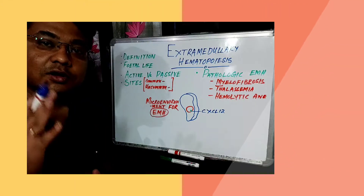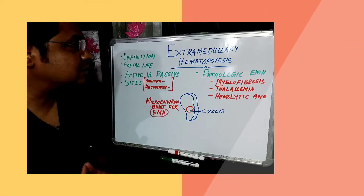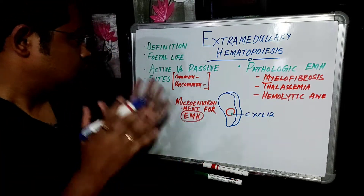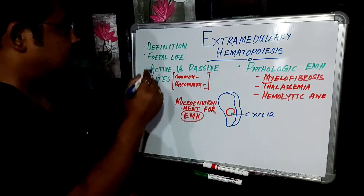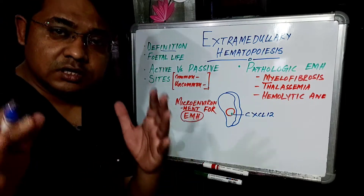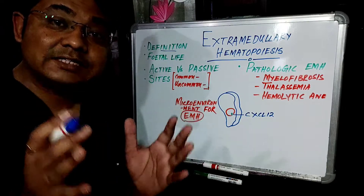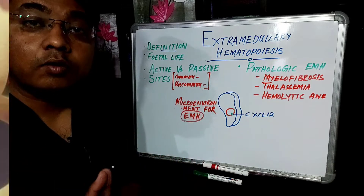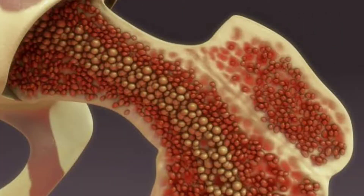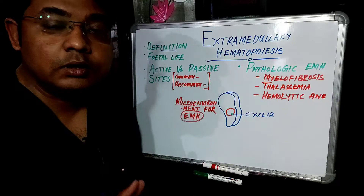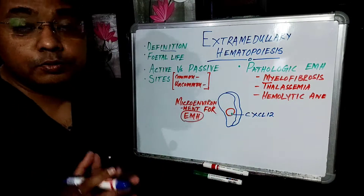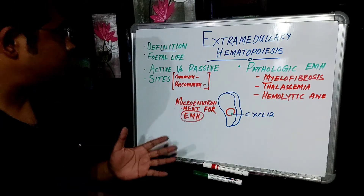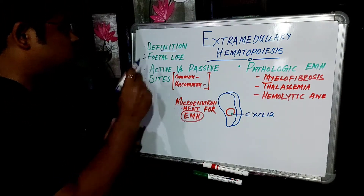Welcome to another vlog. Today the topic of discussion is extramedullary hematopoiesis. The definition of extramedullary hematopoiesis is the process of hematopoiesis that is occurring outside the bone marrow. The normal site for production of blood elements is bone marrow, so if in any adult human being the process of hematopoiesis is taking place outside the marrow, then it is known as extramedullary hematopoiesis.